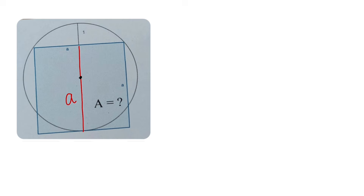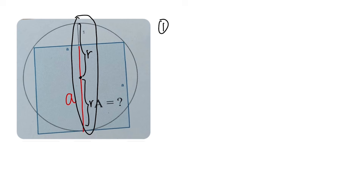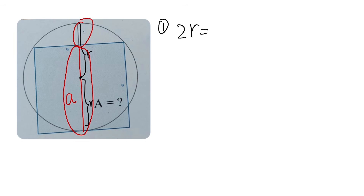Next, let's place the center of the circle somewhere right here and label the radius from the center to the edge as r. Likewise, the radius on the other side is also r. We can form an equation relating r and a: the whole diameter is 2r, and that equals a plus 1, so our first equation is 2r = a + 1.